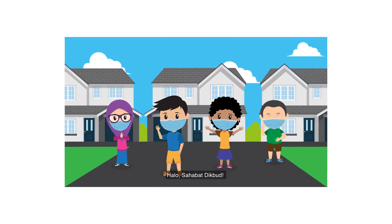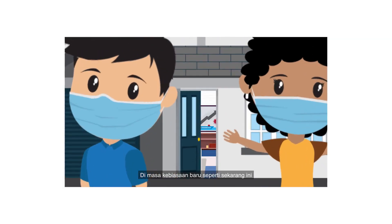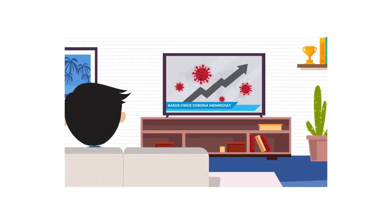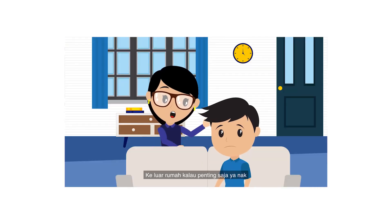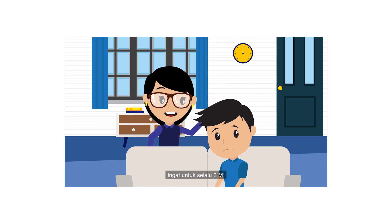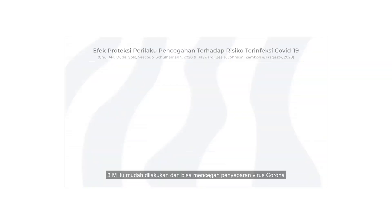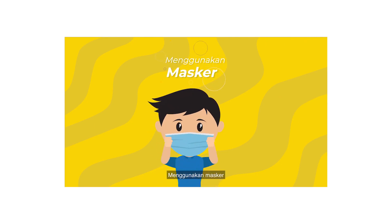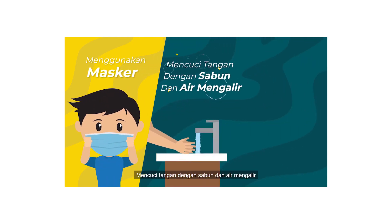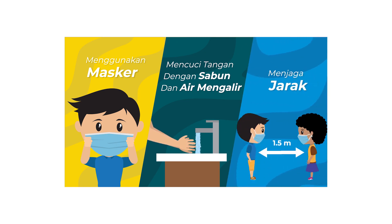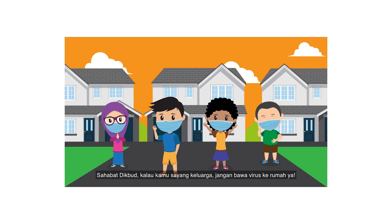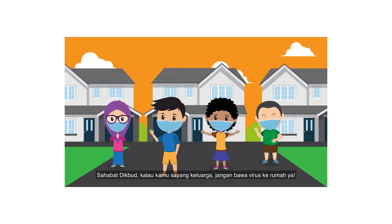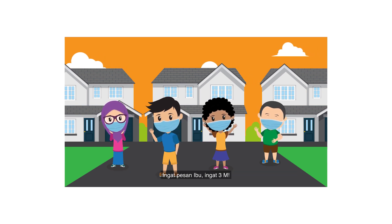Halo sahabat dikut! Di masa kebiasaan baru seperti sekarang ini, ingat selalu pesan ibu. Keluar rumah kalau penting saja ya nak, ingat untuk selalu 3M. 3M itu mudah dilakukan dan bisa mencegah penyebaran virus corona: menggunakan masker, mencuci tangan dengan sabun dan air mengalir, menjaga jarak. Sahabat dikut, kalau kamu sayang keluarga, jangan bawa virus ke rumah ya. Ingat pesan ibu, ingat 3M.